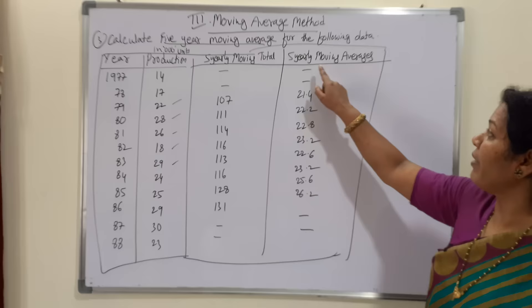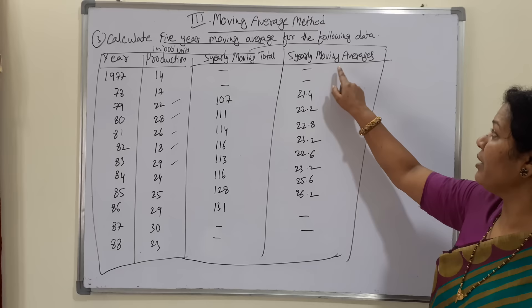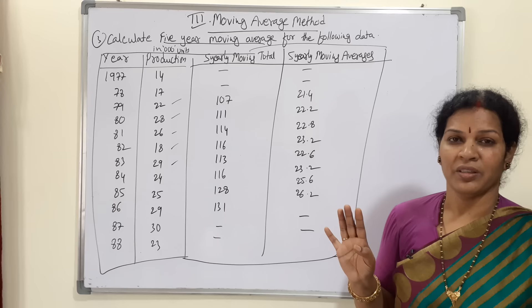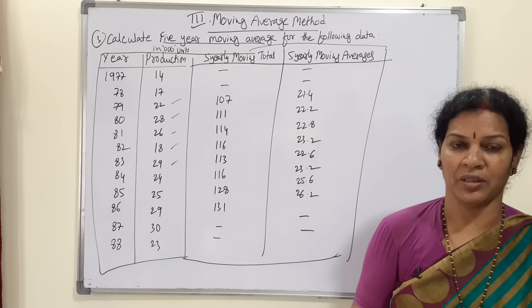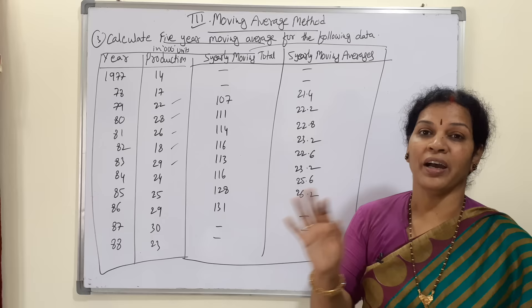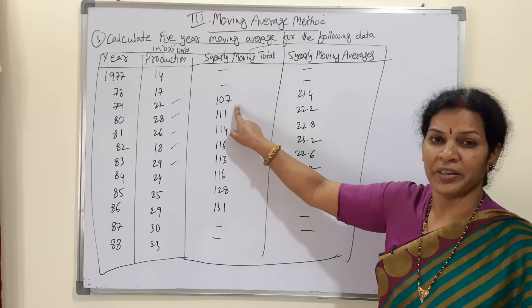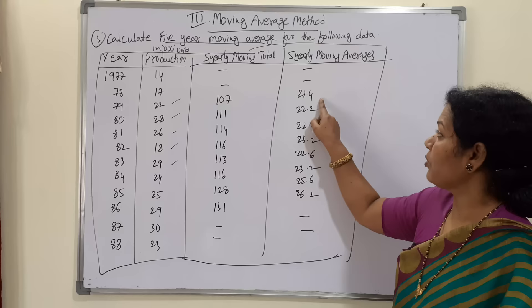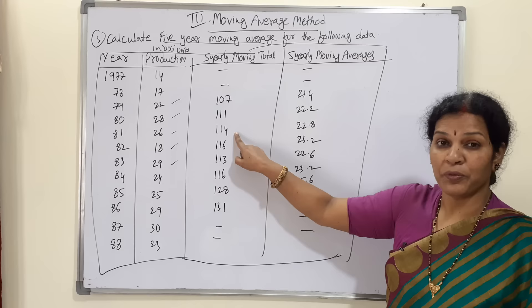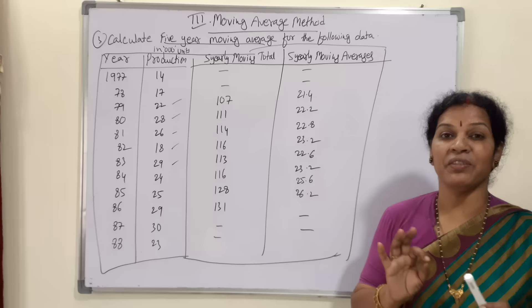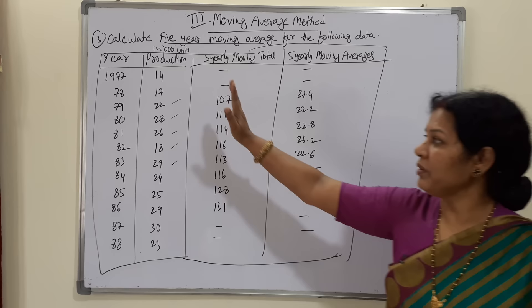Now another column is opened for five-year moving averages. The first year and second year have no data, because the first total of 107 is placed opposite the middle. Similarly, the last two years have no data. For the average: 107 divided by 5 gives 21.4; 111 divided by 5 gives 22.2; 114 divided by 5 gives 22.8.